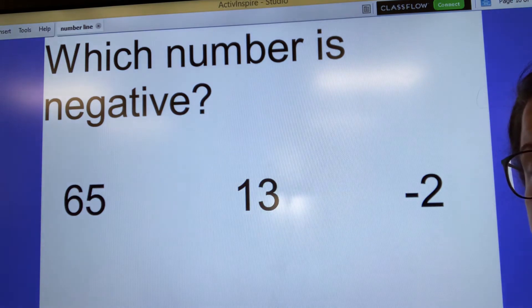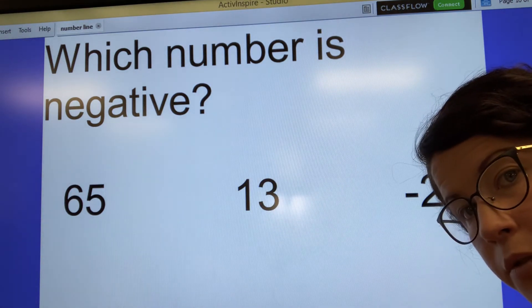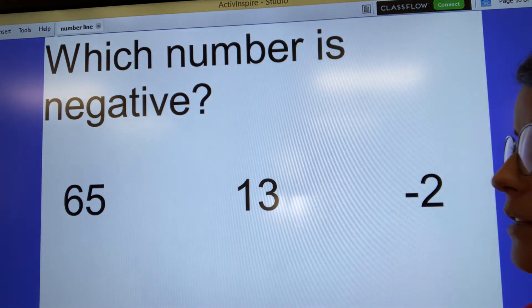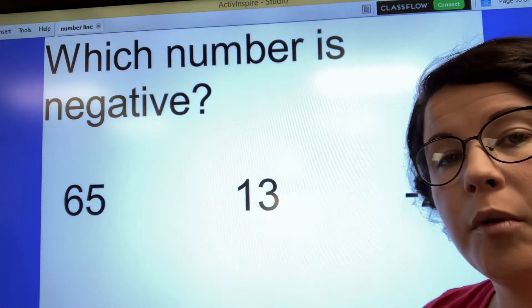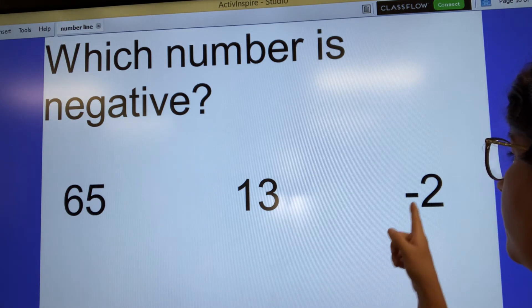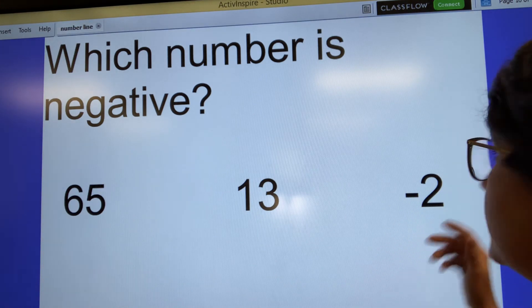Where's the negative number? If you said negative 2 right here, you're correct. 65 and 13 are both positive. Negative 2 is negative. You see the sign. That's what makes it negative.